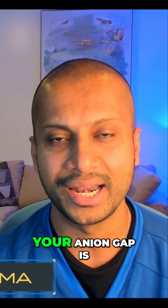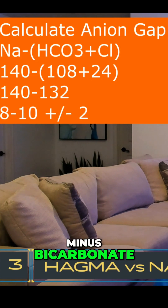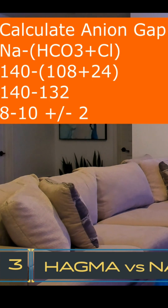What is an anion gap made of? Your anion gap is serum sodium minus the sum of bicarbonate plus chloride. Your normal serum sodium is 140, normal bicarb is 24, and chloride is 108. So 140 minus (108 plus 24) equals 140 minus 132, which gives you 8. Your normal anion gap is about 8, plus or minus 2, so it ranges from about 6 to 10.